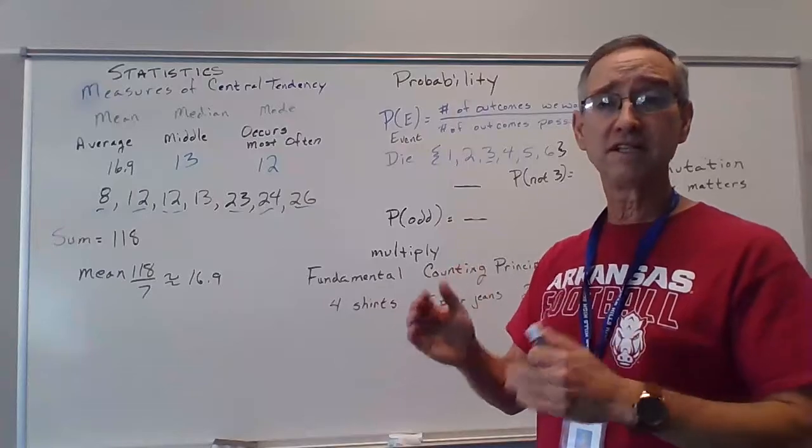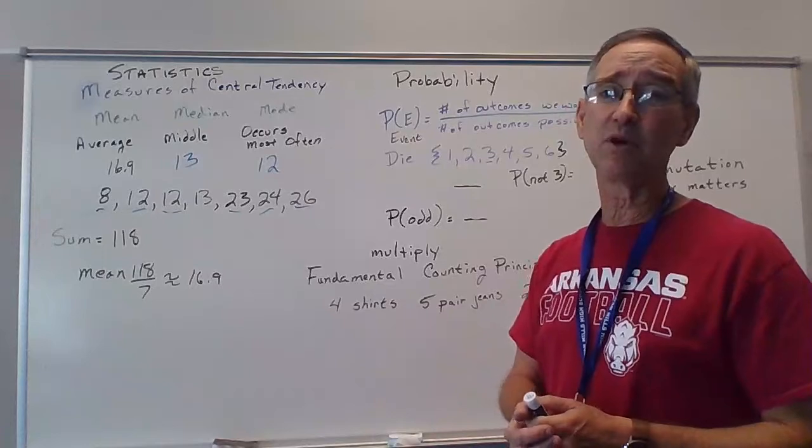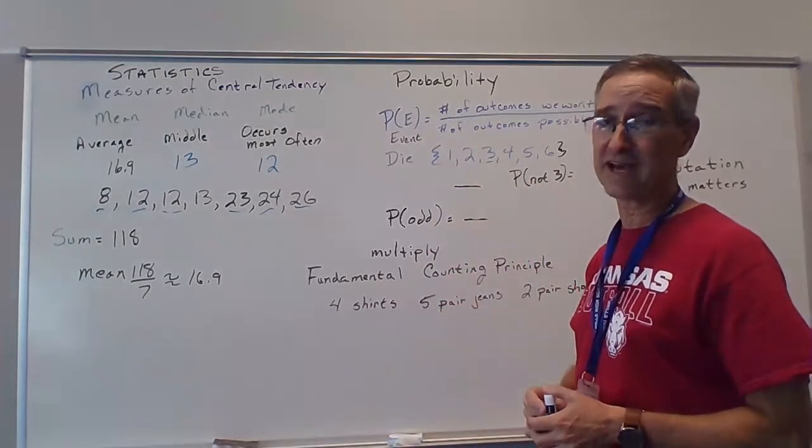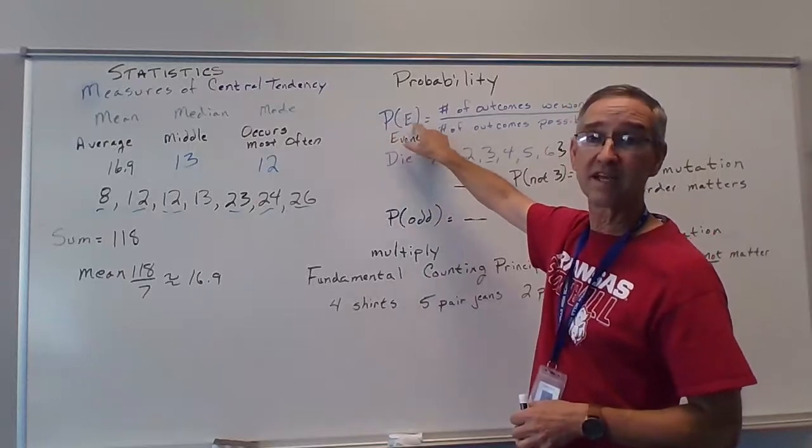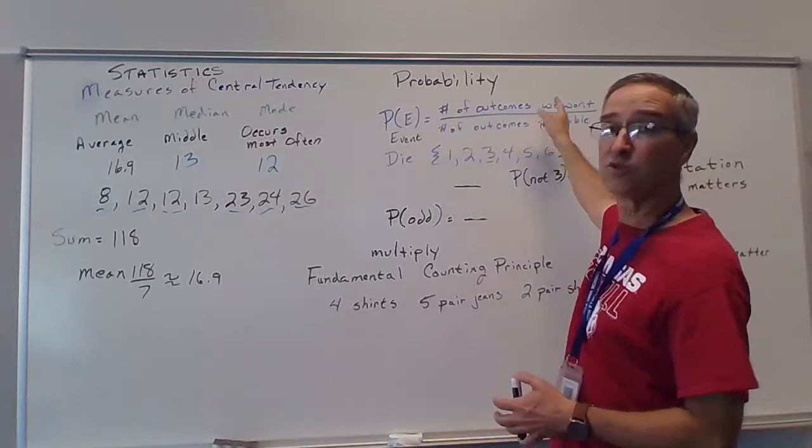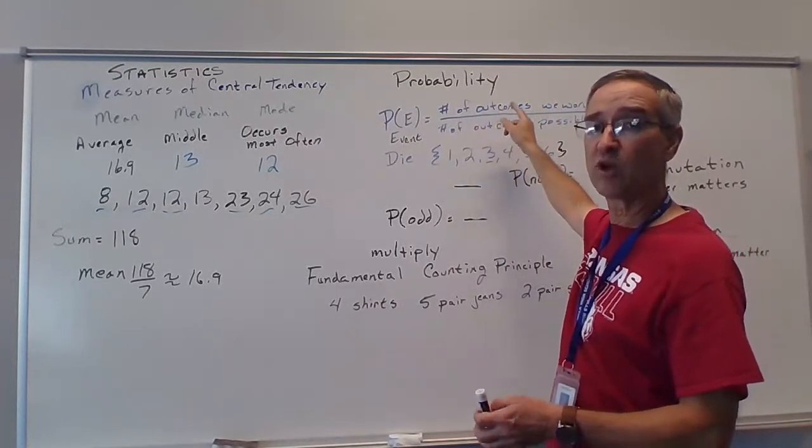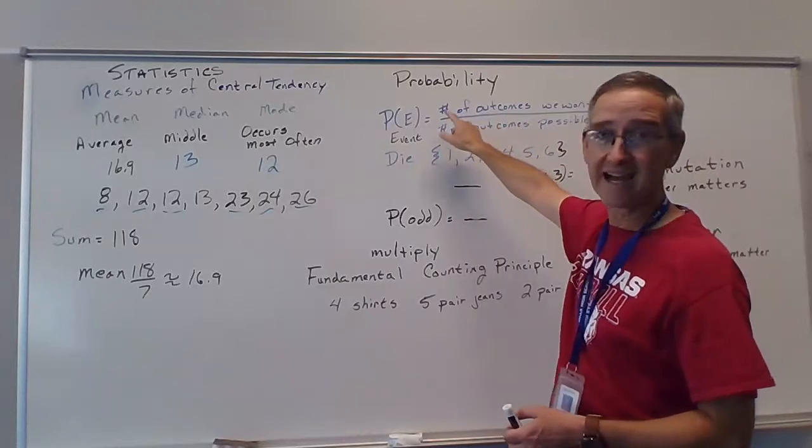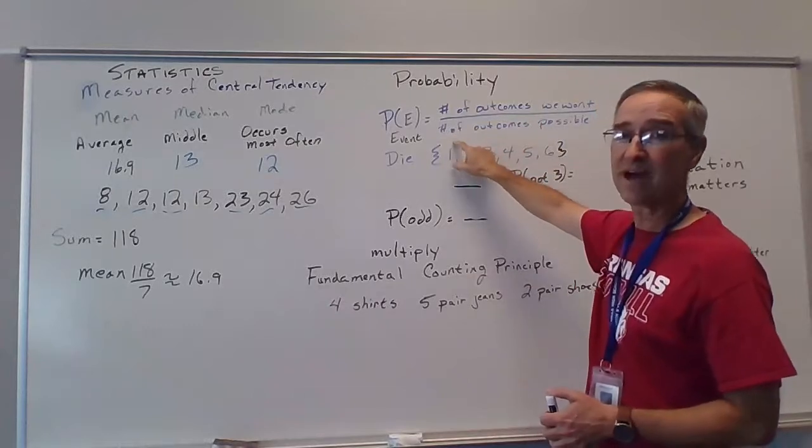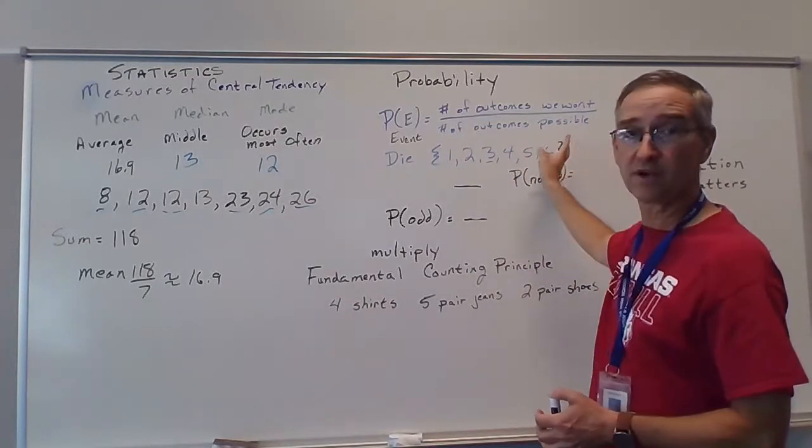So from statistics, we're going to go into probability. And this is a basic simple concept as well. So we're looking at probability. Probability is defined as the probability of an event. E stands for simply event. The number of outcomes we want to occur. W-A-N-T. The number of outcomes we want to occur. That's not hashtag. That's pound, meaning number. Number of outcomes we want divided by the number of outcomes possible. The number of outcomes possible.